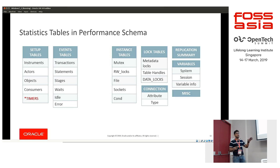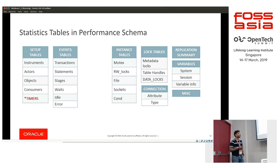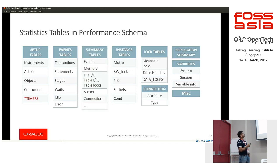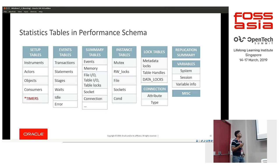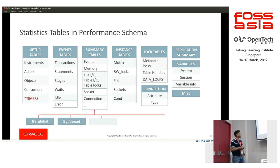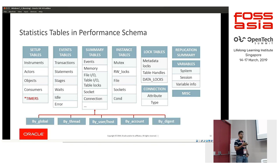Apart from statistics collection, Performance Schema also aggregates statistics. We have summary tables for events — these events correspond to different stages — as well as summary tables for memory, I/O, and connections. All these summary tables are categorized by different dimensions: summary by global, by a specific user, by a specific host, by a specific session, and by digest.